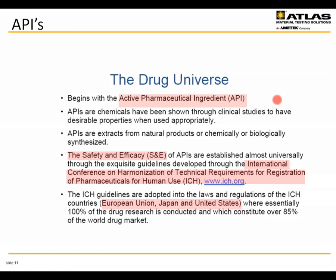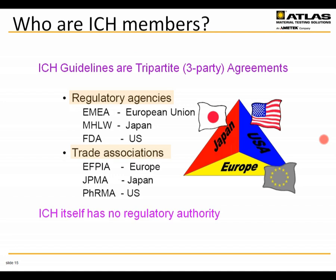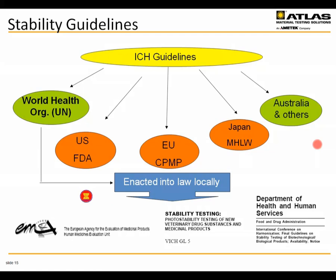It's between these countries where the vast majority of drug research and much of the drug manufacturing is conducted. The ICH tripartite agreement was established by a collaboration between federal regulatory agencies, trade associations, and other interested third parties. The ICH itself has no regulatory authority; it establishes guidelines that filter down to regulatory agencies in member states, such as the FDA in the United States, and are enacted individually by countries into law. The ICH guidelines have largely been adopted by the U.S. Food and Drug Administration, published in the Federal Register, and become U.S. law.